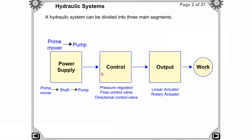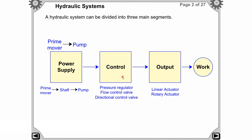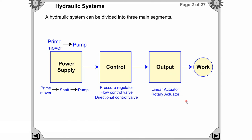In the power supply segment there is the prime mover and pump. In the control segment there is the pressure regulator, flow control valve, and direction control valve — these components control the fluid. In the output segment there are linear actuators and rotary actuators for output purposes. This hydraulic system is divided into three main segments; let us discuss each one by one.